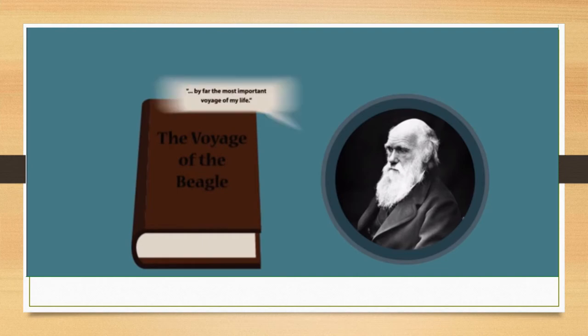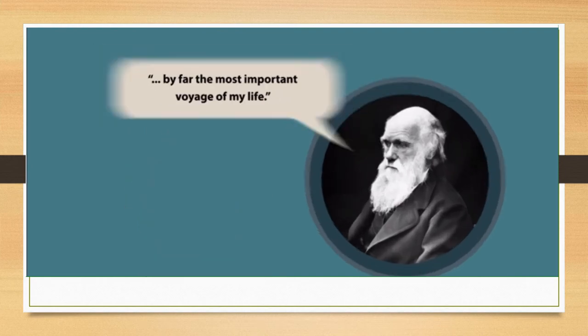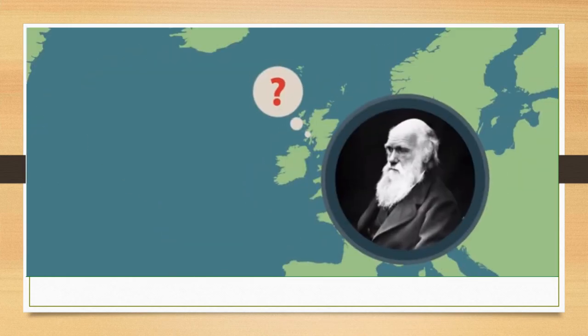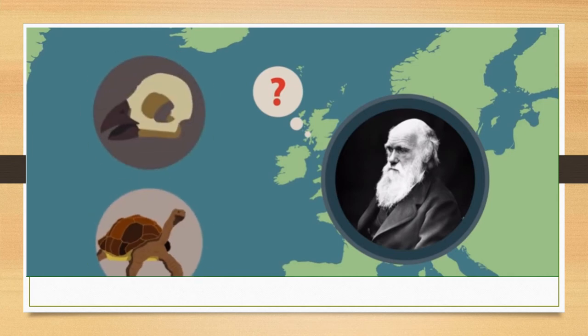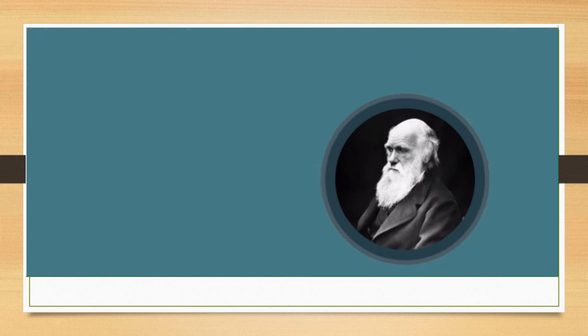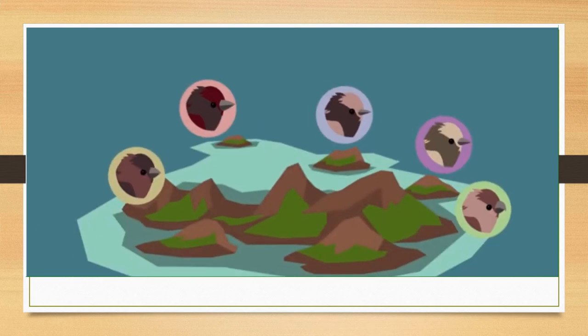Darwin called his trip on the HMS Beagle by far the most important voyage of my life. On his return to the UK, Darwin became puzzled by the geographic distribution of wildlife and fossils he had collected on the voyage. He noticed that whilst there were species of animal that existed unchanged across the globe, some other species showed physical differences based on the ecological habitat from which they came. This was particularly apparent in his observations of the Galapagos finches which showed variations in their beaks and claws depending on the type of food that was available to them.